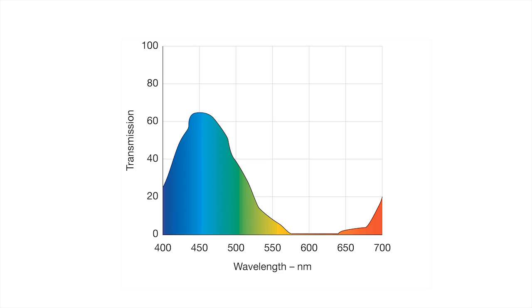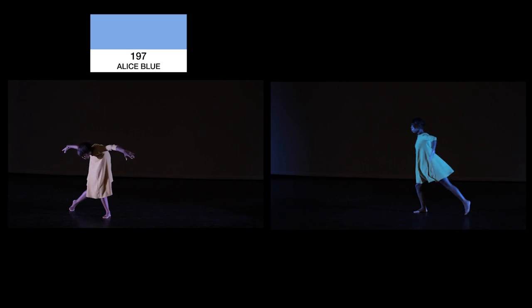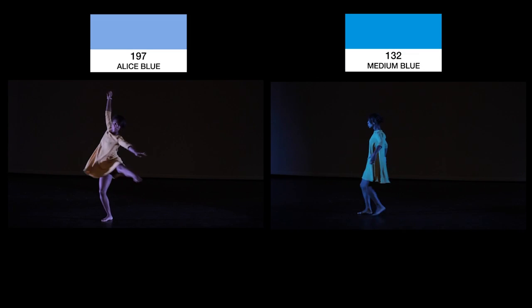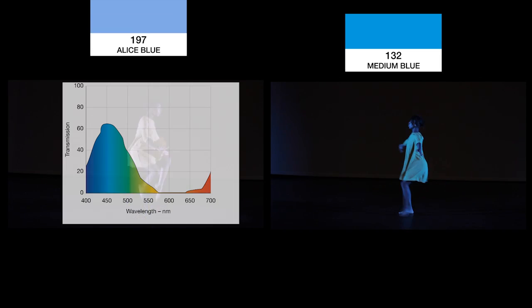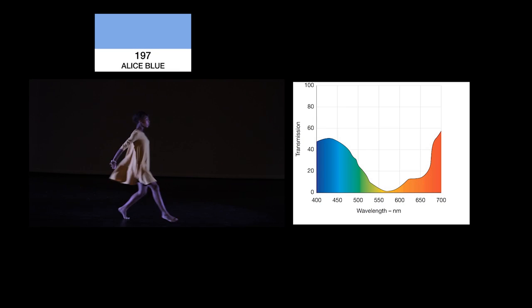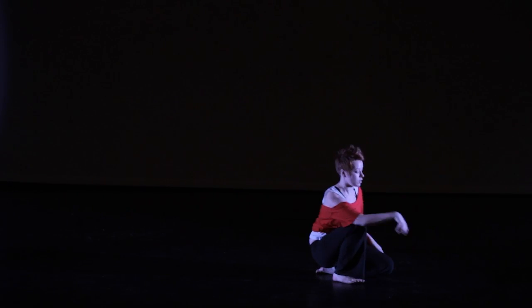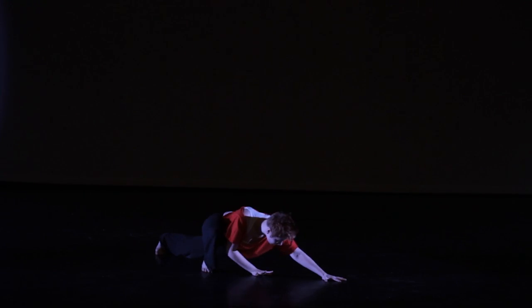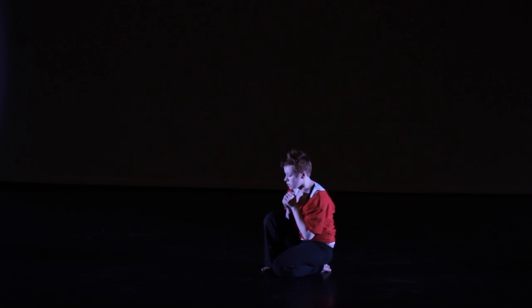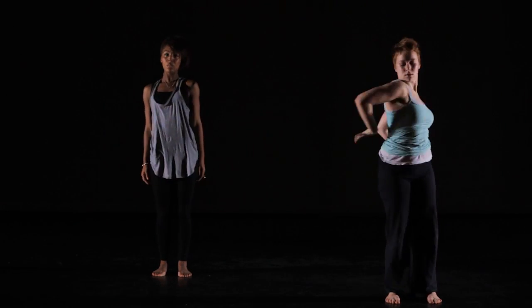How do you know whether the filter you've chosen contains the right colors? The transmission curve that Lee provides with each filter is a good guide. Let's look at two different shades of blue — a warm blue, 197, and a cold blue, 132. The cold blue blocks more of the red portion of the spectrum. Most colors have all parts of the spectrum present, albeit to varying degrees, which is why some blue filters can still work with red objects. If you're careful with your selection, your colors will work well with the majority of elements that you're lighting.